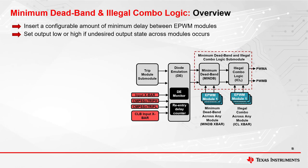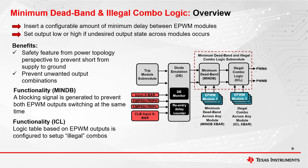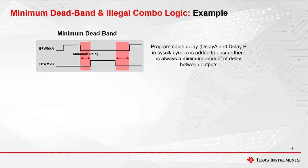The minimum deadband and illegal combo logic submodule have been added to provide additional security features. The main benefits of these submodules are the prevention of shorts occurring and having unwanted output combinations. The minimum deadband and illegal combo logic will come after the diode emulation. The minimum deadband submodule will insert a minimum delay between EPWM outputs based on the falling edges of the outputs. The illegal combo logic submodule will prevent combinations of EPWM outputs from occurring by setting them to a known state. From the block diagram, there are two crossbars named minimum deadband crossbar and illegal combinational logic crossbar, described in the crossbar chapter.